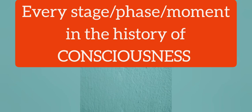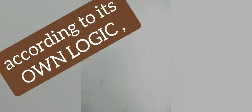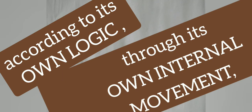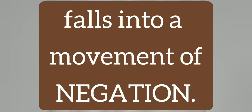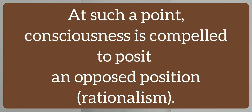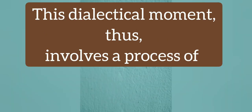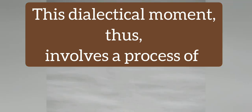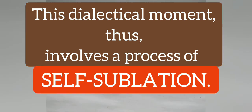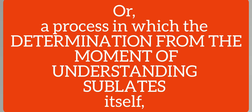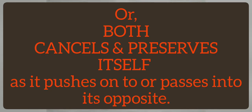Every stage or phase or movement in a history of consciousness and thought imminently, according to its own logic, through its own internal movement, falls into a movement of negation. At such a point, consciousness is compelled to posit an opposing position. This dialectical movement or stage thus involves a process of self-sublation, or a process in which the determination from the moment of understanding sublates itself — both cancels and preserves itself as it pushes on or passes into its opposite.